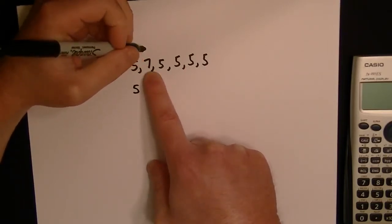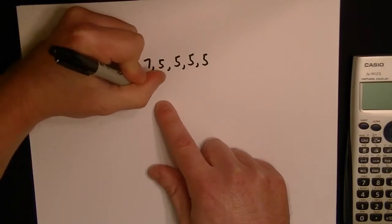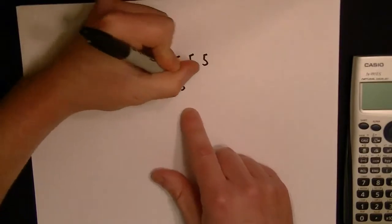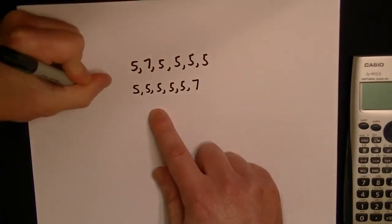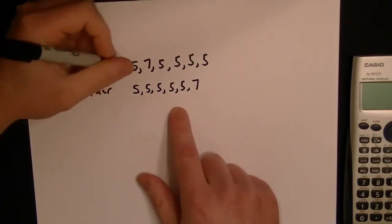So here, 7 is the largest number, so obviously all the 5s are smaller. So we're going to have 5, 5, 5, 5, 5, and then a 7. So first this is reordered, right? You order this set of numbers.